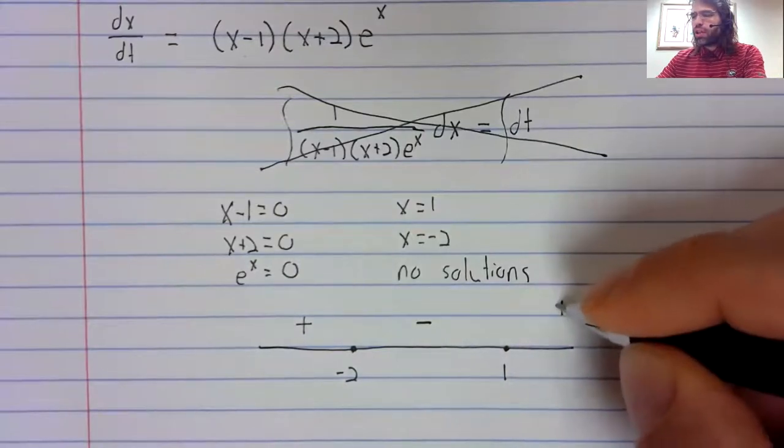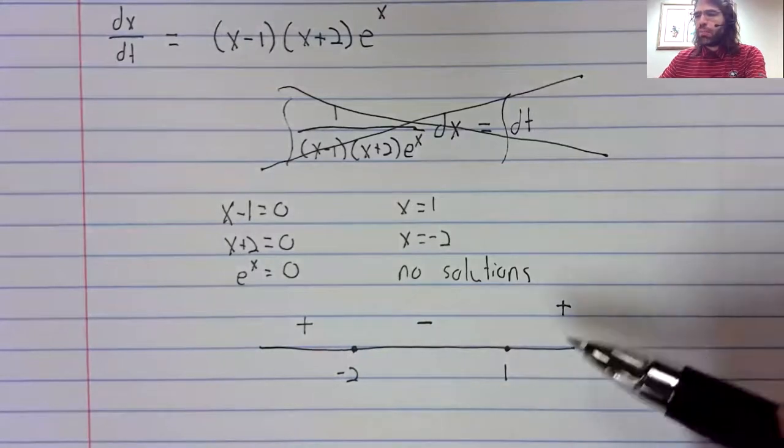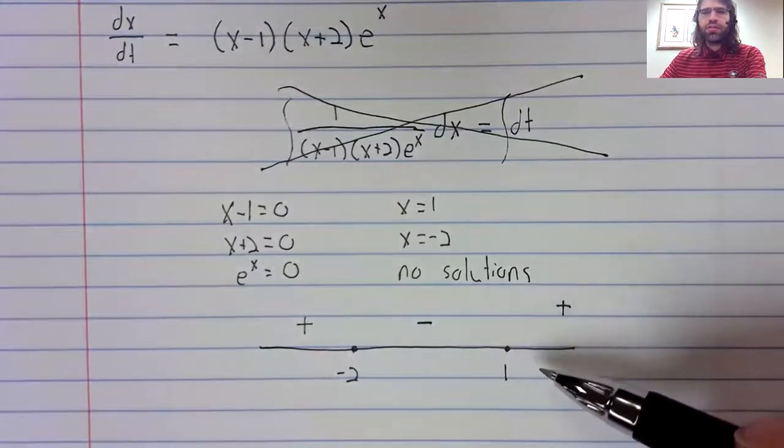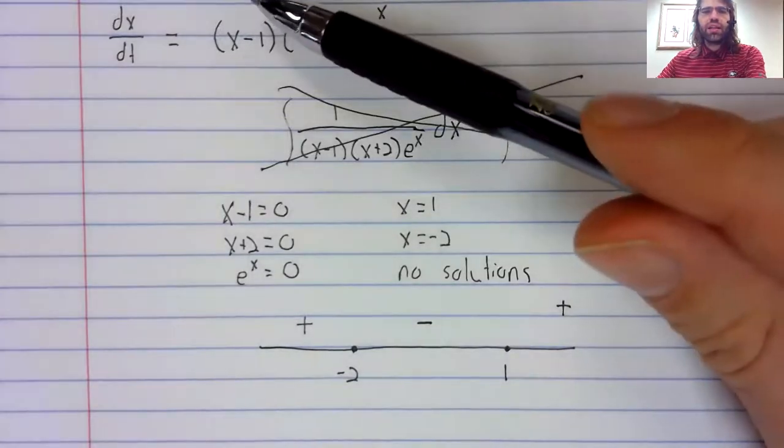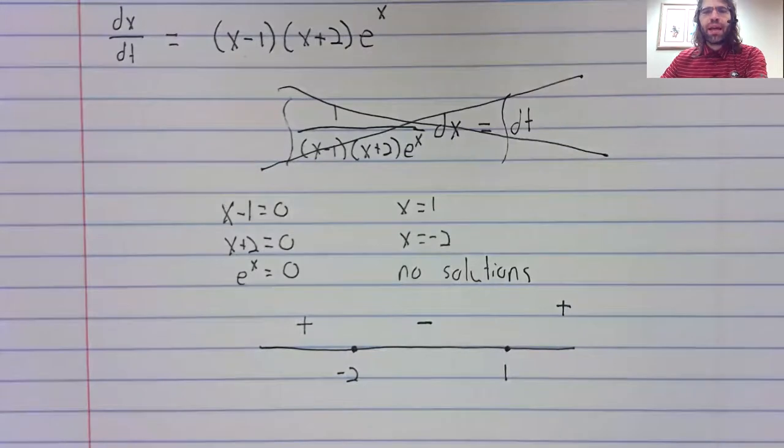And over here, the derivative is positive. Pick any number greater than one, say two, plug it in here, you'll get a positive number back again.